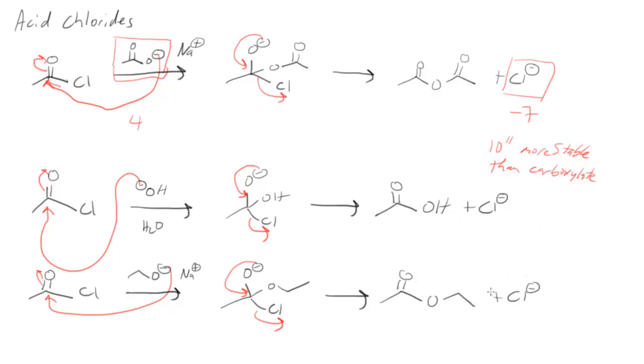You can do the same analysis again. Look at the stability of chloride ion versus the stability of the alkoxide. The pKa of the conjugate acid of the chloride is minus 7. The pKa of alcohol, the conjugate acid of this alkoxide, 15 to 18. So this is 10 to the 22 to 10 to the 25 times more stable. Once again, very good driving force to make this reaction occur.